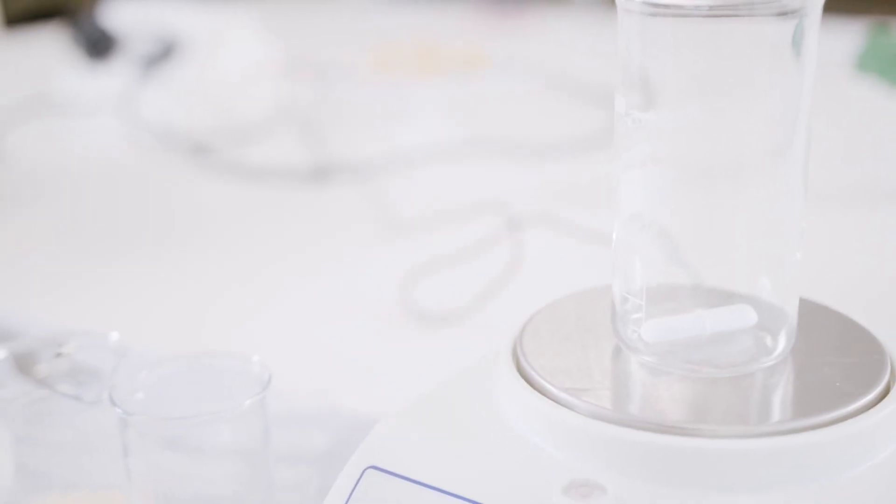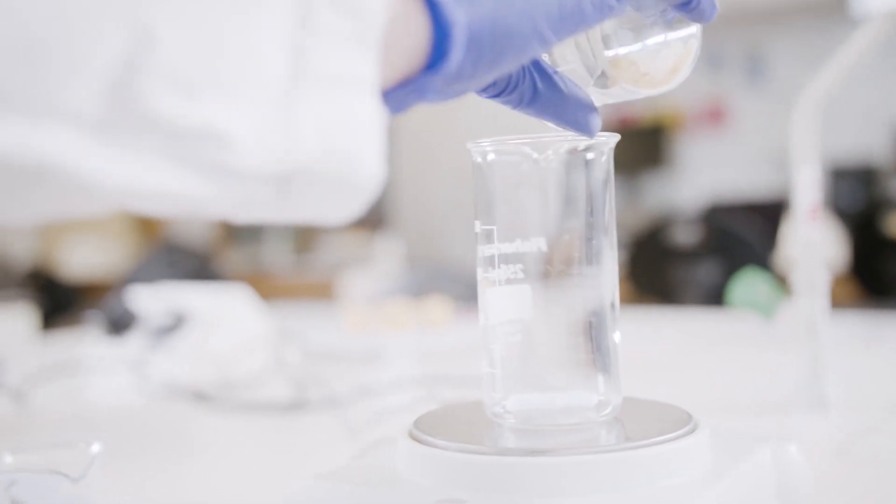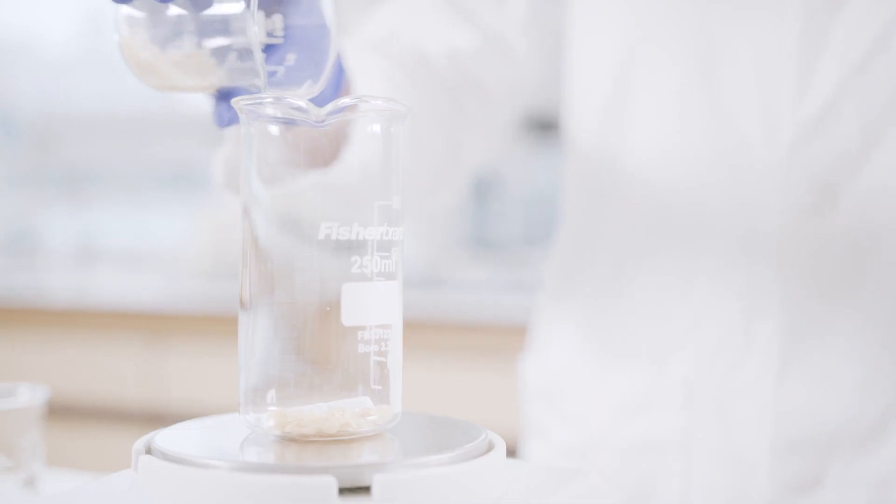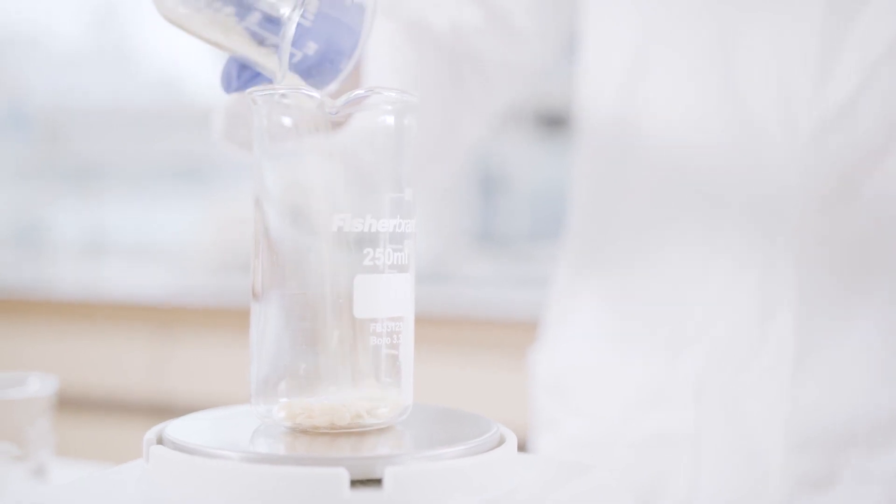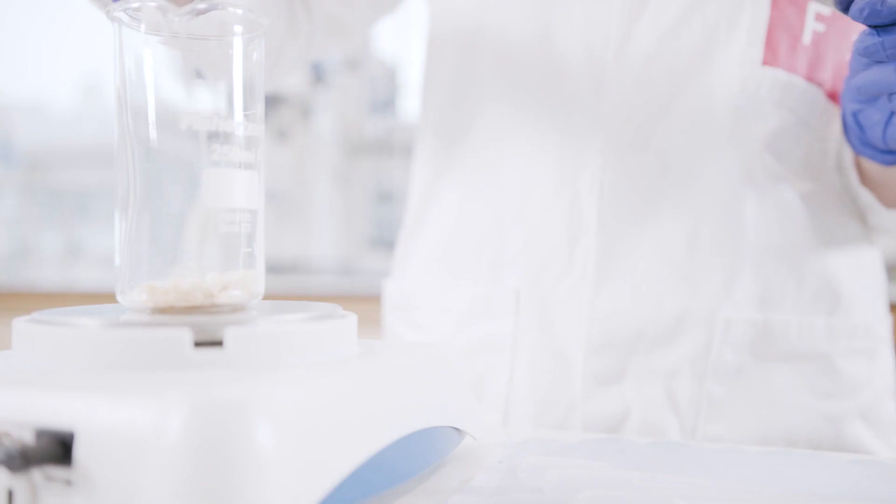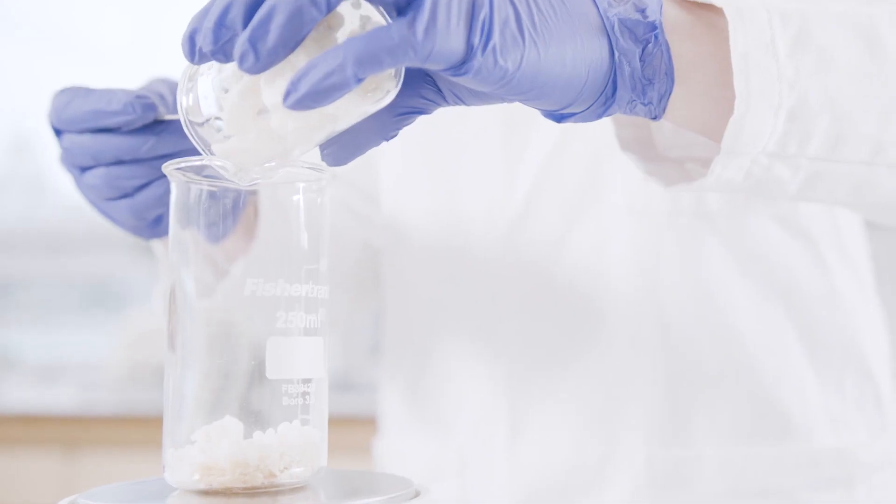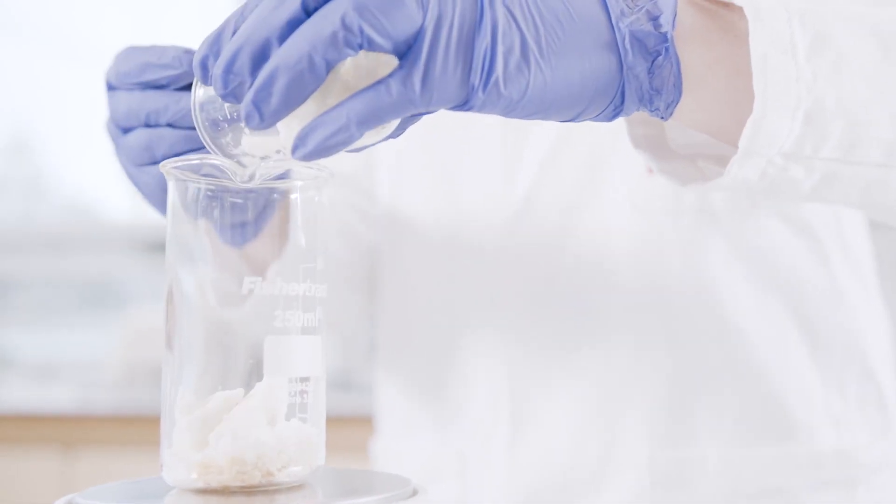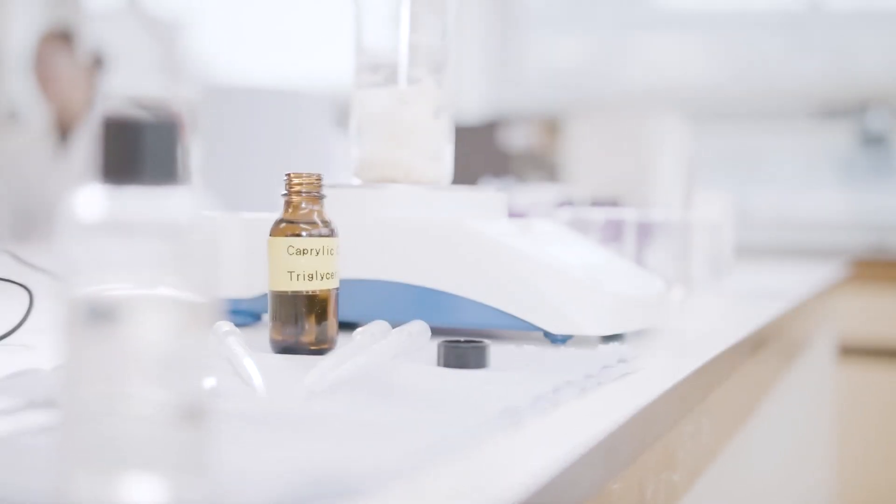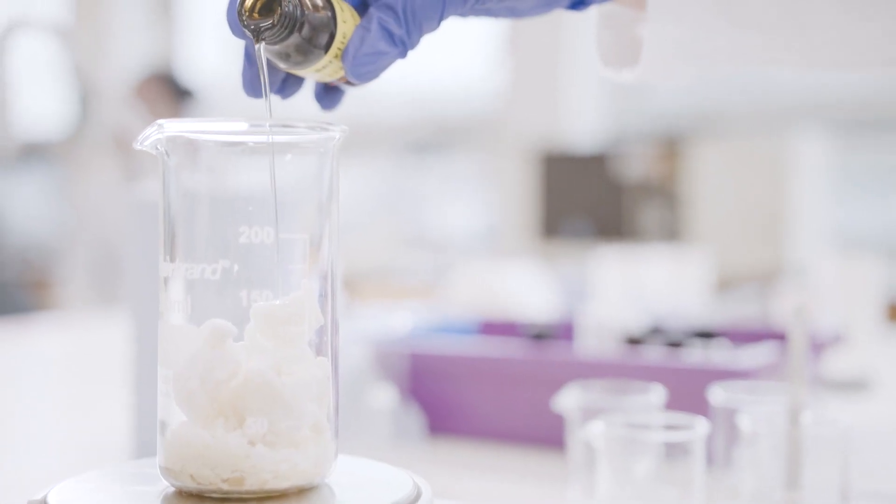We cancel out the weight of our beaker on the balance and then we add our least sticky materials, so candelilla wax, then the carnauba, then the beeswax, then the shea butter. Then we add our oil, so we add capric caprylic triglyceride and castor oil.